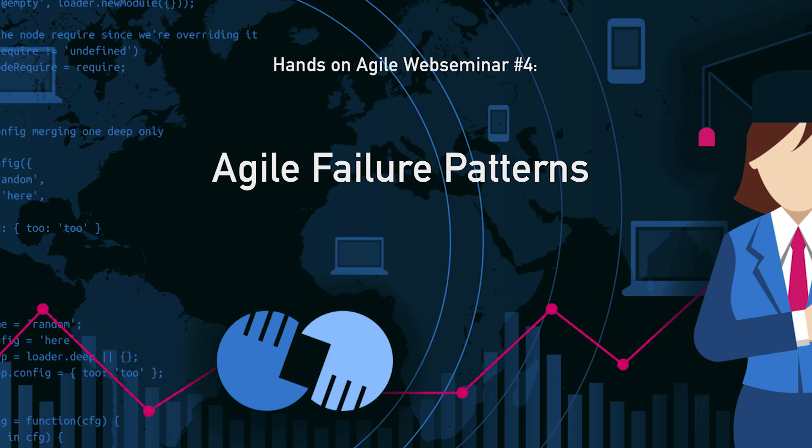Welcome everybody to the fourth Hands-On Agile webinar. Today we will be talking about Agile failure patterns. I'm your host, Stefan Wolpes. This webinar is not intended to be some kind of complaining session. It's about pointing at issues that are usually located outside the sphere of influence of the Scrum team, the Scrum master, or Agile coach, and that are likely to derail or stall a transition effort to become an Agile organization.